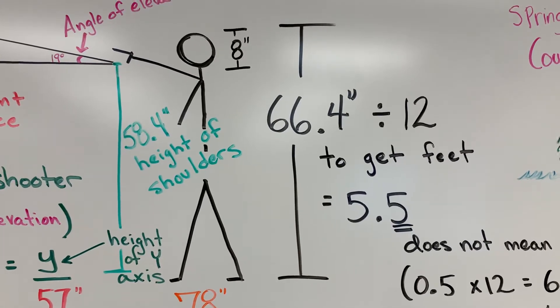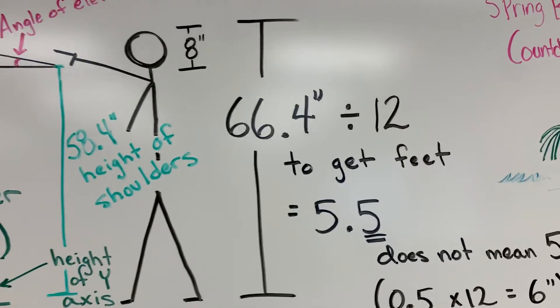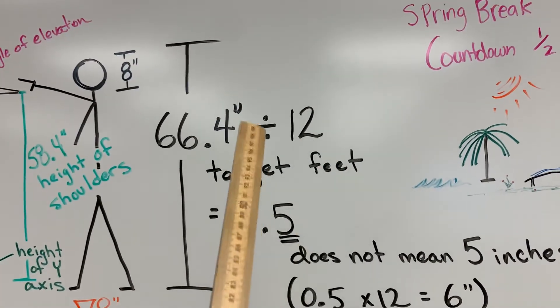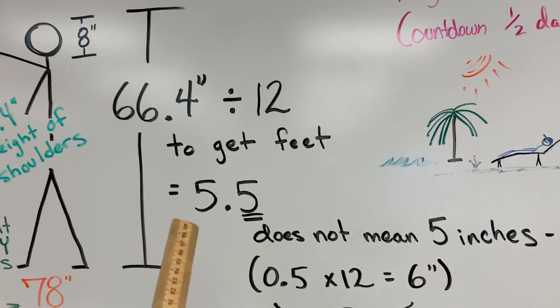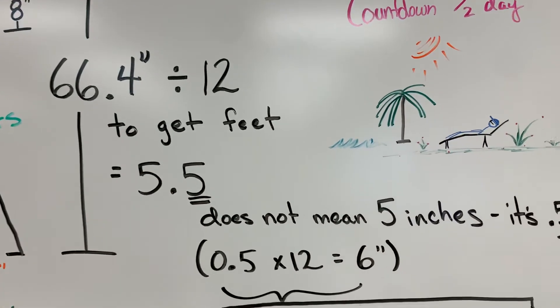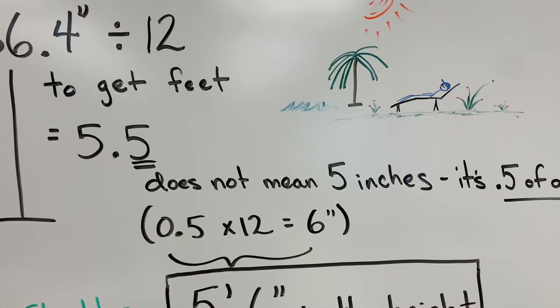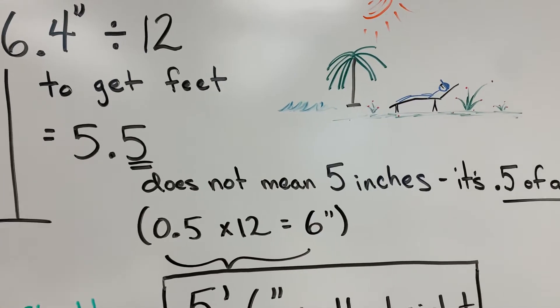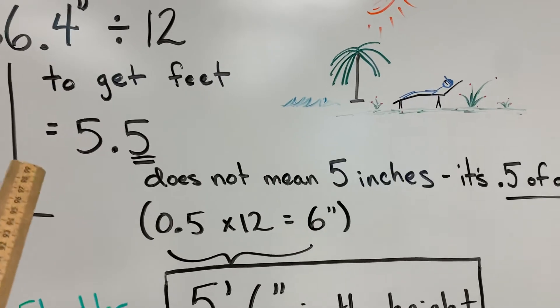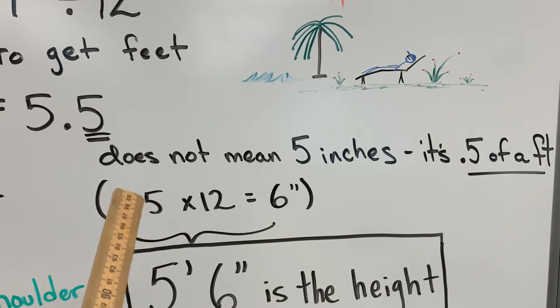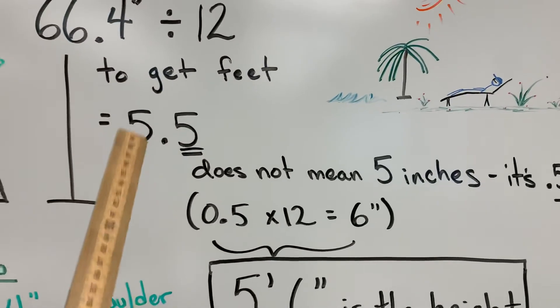Well, of course we don't measure people in just inches. We like to measure in feet here. And so we divide by 12 to get to feet and that gives us 5.5 feet. But remember 0.5 of a foot does not mean five feet, five inches. 0.5 of a foot is half of a foot.